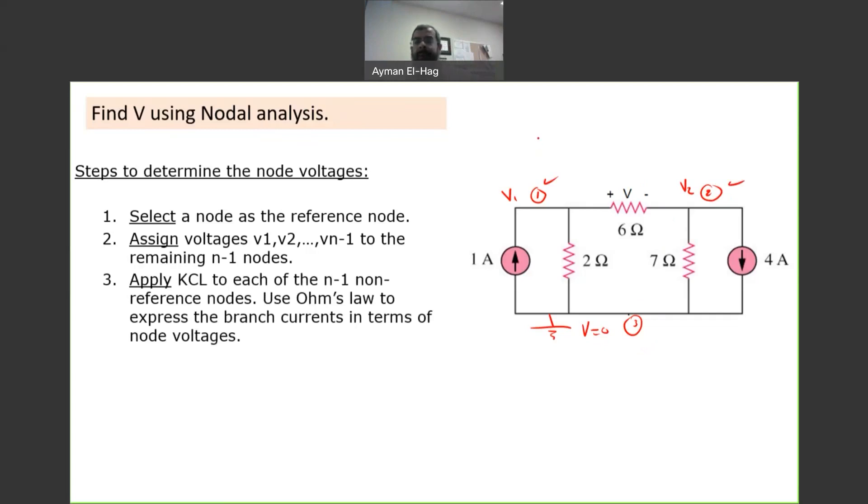However, the way we apply KCL or represent the current is a bit different than what we used before. So, if this is two nodes and this is the resistance, so I will not assign a variable, I call it I. No. The current here will be in terms of these two node voltages and the resistance, V1 minus V2 divided by R.